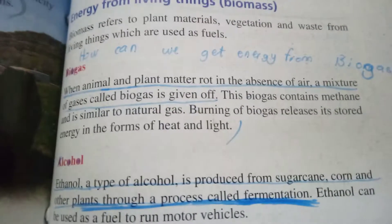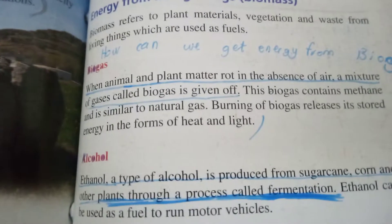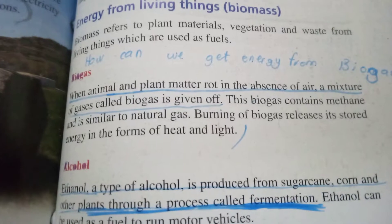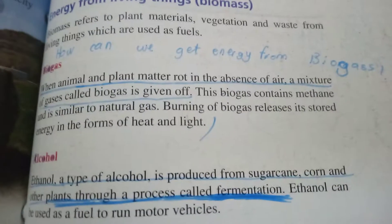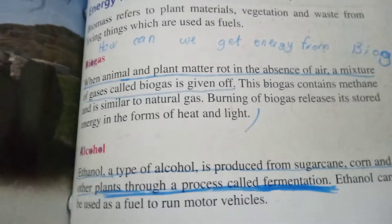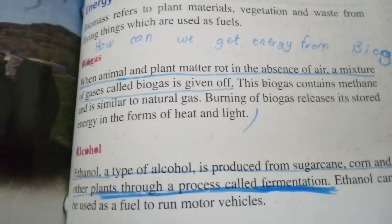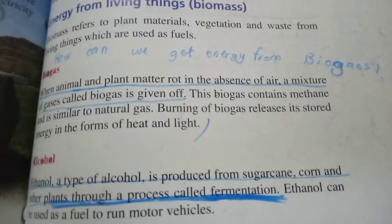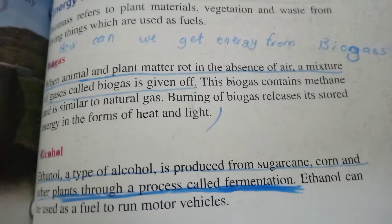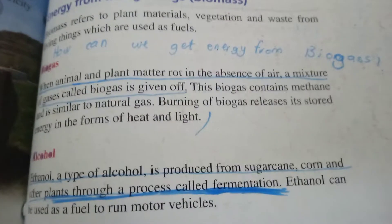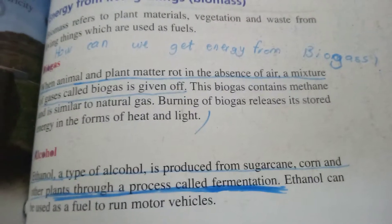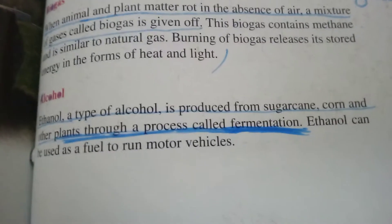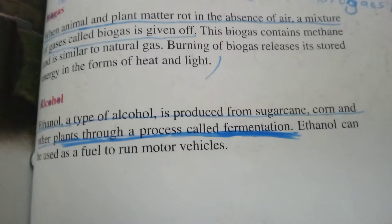Biogas: when plants and animal matter rot in the absence of air, a mixture of gas called biogas is given off — jab yeh galsat jate hain podde or janver. This biogas contains methane and is similar to natural gas. Burning of biogas releases its stored energy in the form of heat and light.